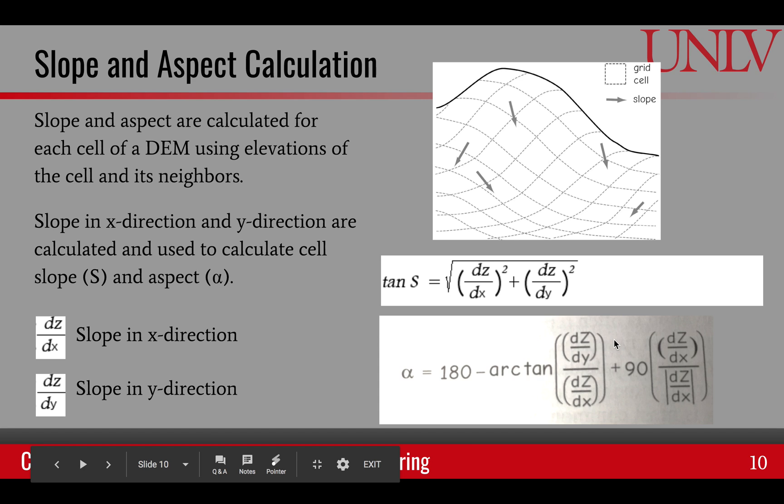When we are calculating the slope and aspect, we primarily use the neighboring cells. At any given cell, we take the eight neighbors of that cell, and what we compute is the x direction slope and y direction slope. That is dz/dx and dz/dy, where z is the elevation. Once we have these two numbers, then slope and aspect can be easily calculated.